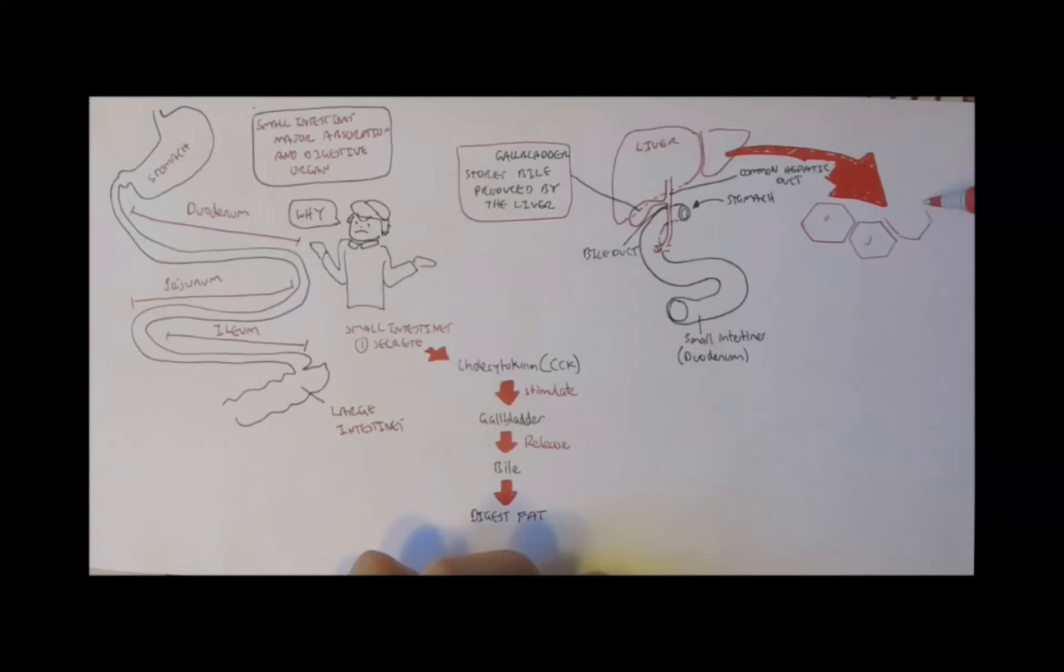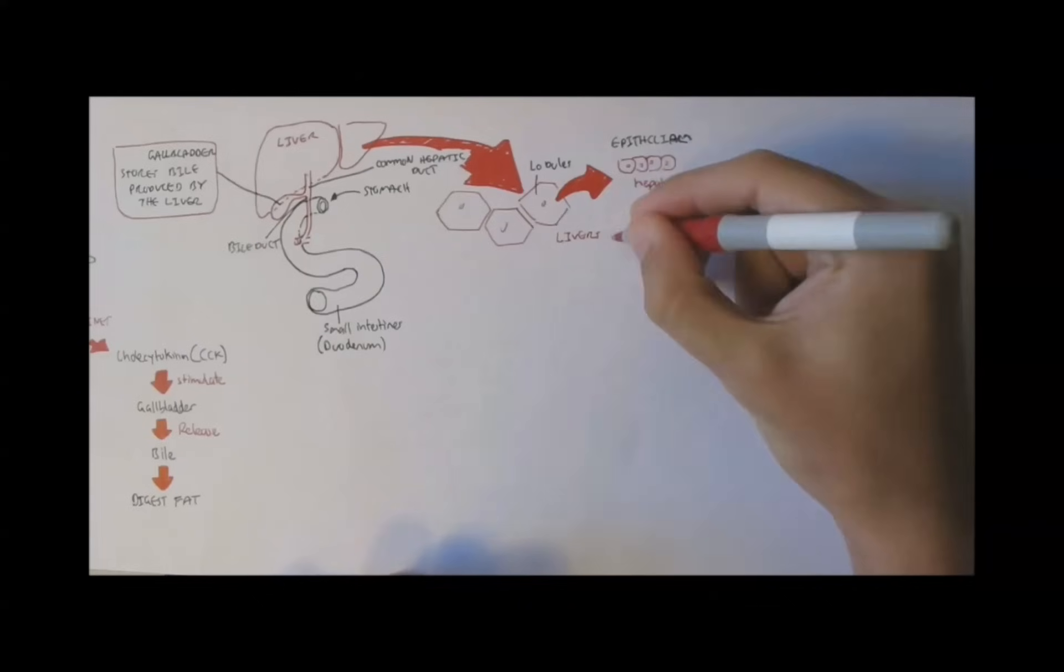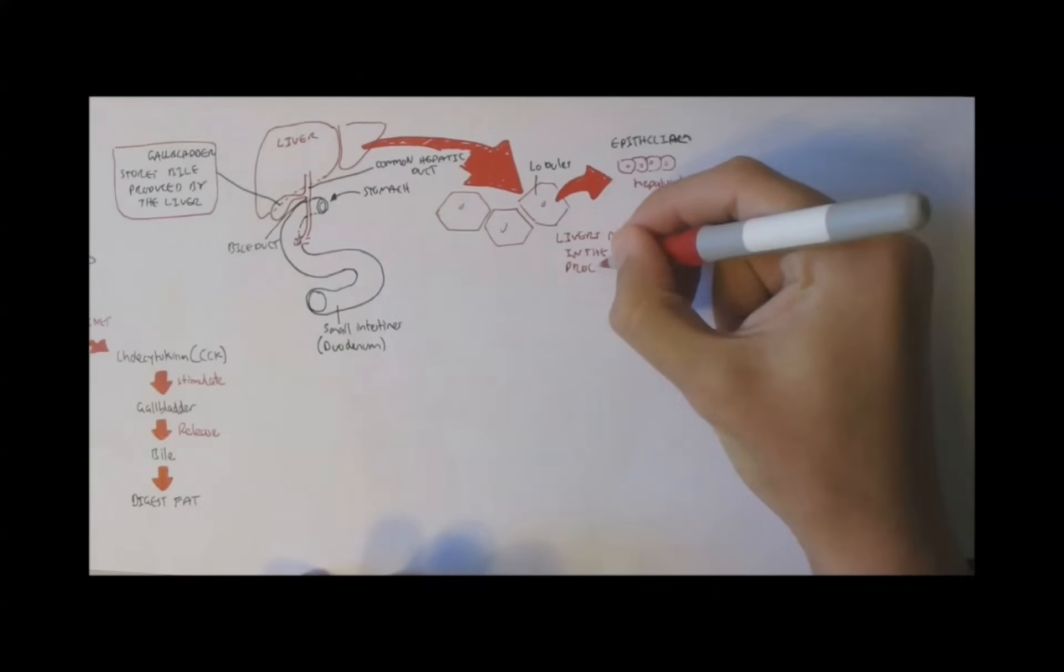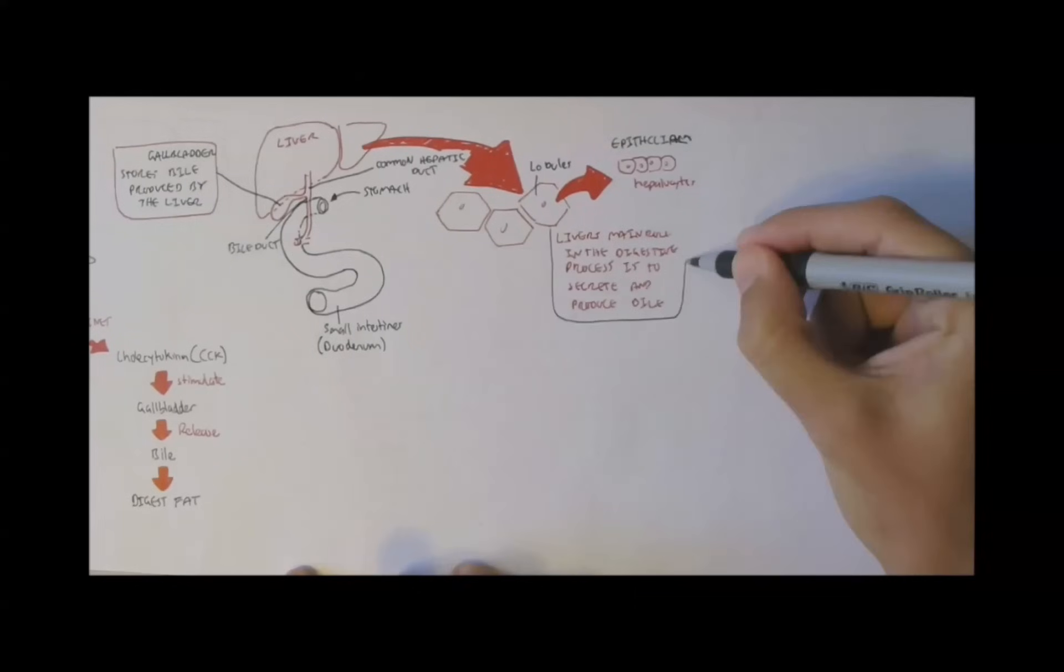The liver is two-lobed and is composed of many hexagonal units called liver lobules. Each lobule is composed of epithelial cells called hepatocytes. Hepato means liver. And again, the liver's main role in the digestive system is to produce bile for fat digestion. And it gets stored in the gallbladder.